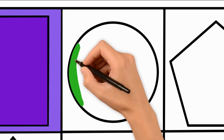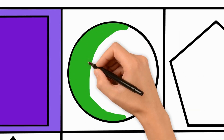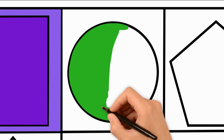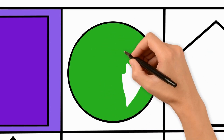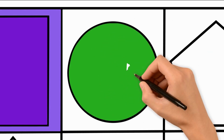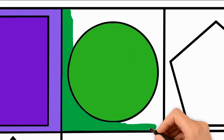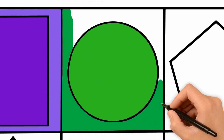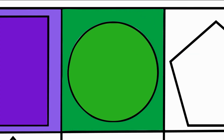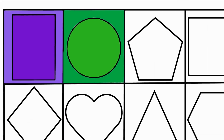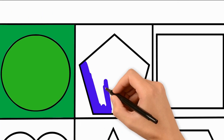The circle will be 2 different shades of green. The pentagon is dark blue and light blue.